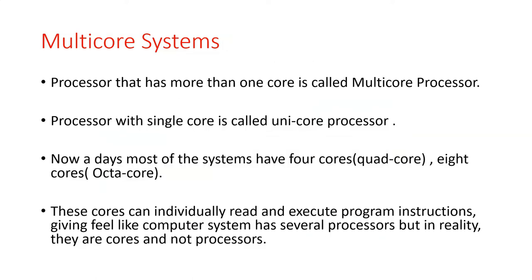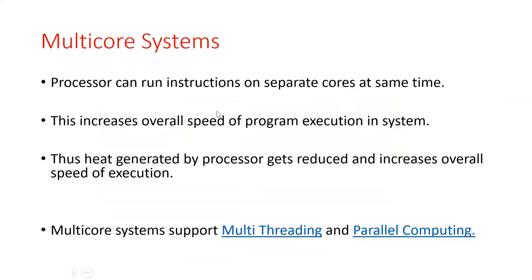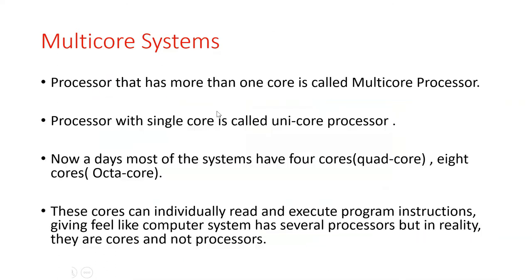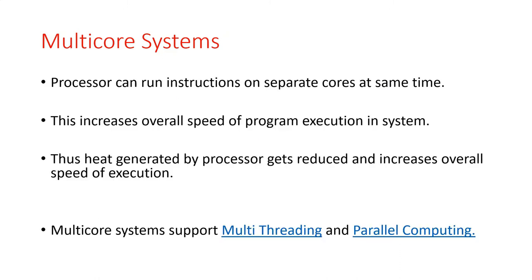These cores individually read and execute. Each core can read and execute program instructions. So we feel that there are more processors going to execute your program, but in fact each core is going to execute each and every instruction in parallel.